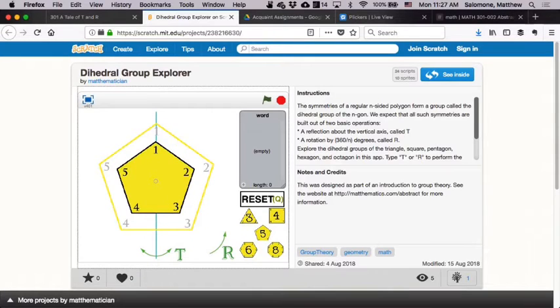One of the ways of writing the same symmetry in two different ways for a pentagon might be, let's say I do R followed by R followed by T. So two rotations followed by a reflection. I end up with a pentagon that looks like this, so maybe the thing to notice is that 3 is at the top and we're looking at the backside of the pentagon.